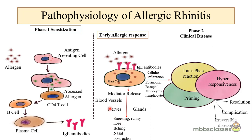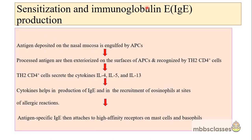In the pathophysiology, there is a role of the cellular cascade. There is a recruitment of inflammatory cells to the nasal mucosa - cells like eosinophils, basophils, monocytes and lymphocytes come to the site and result in a state of chronic inflammation. This makes the person hyper-responsive to specific and non-specific stimuli, which is called priming of the nasal mucosa, and this hyper-responsiveness is the hallmark of the disease. This flow chart shows the sensitization and immunoglobulin E production: antigen gets deposited, processed, recognized by CD4 T cells, which secrete cytokines that help in the production of IgE and recruitment of eosinophils at the site of allergic reactions.